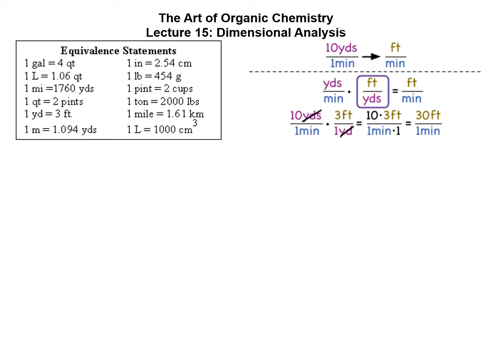For dimensional analysis, if we want to convert yards per minute to feet per minute, the way we set this up is yards per minute times feet per yards equals feet per minute. Notice yards in purple cancel out, and so what we're left with is feet per minute. So an example would be 10 yards per minute. We set it up 10 yards per minute times 3 feet per yard equals 30 feet per minute. Pretty simple.